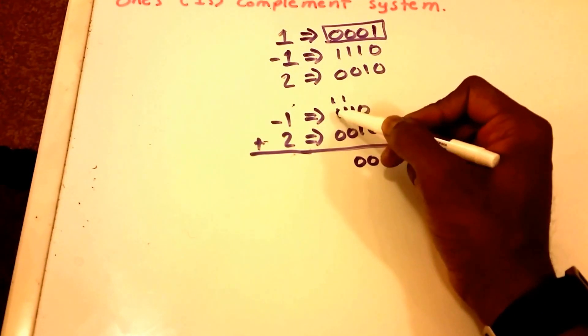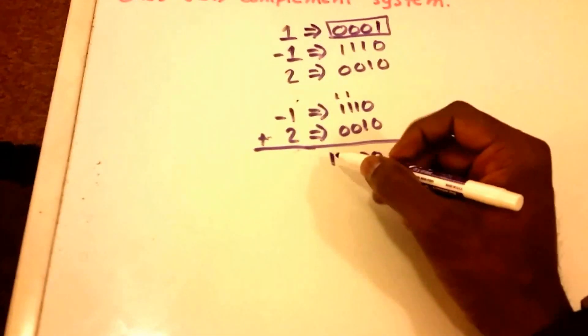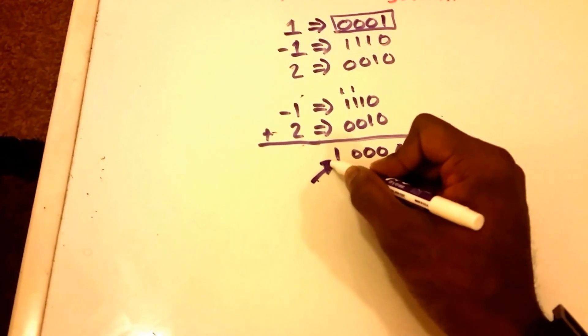And then we get one plus one which is zero with a carry of one. So that one there is our carry.